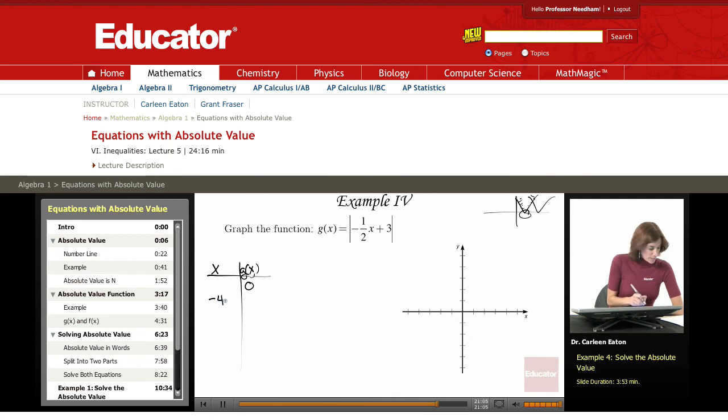So picking some values for x. When x = -4, g(x) = 5. When x = -2, g(x) = 4. When x = 2, g(x) = 2.